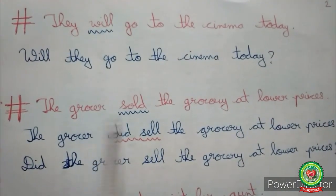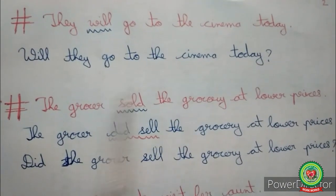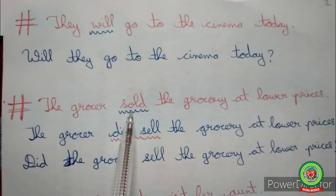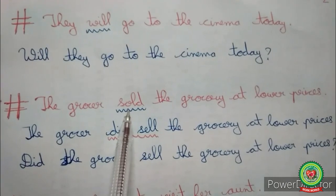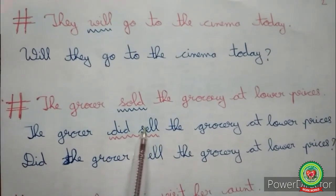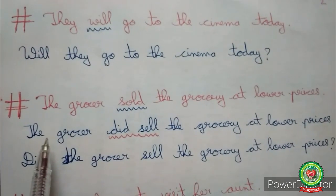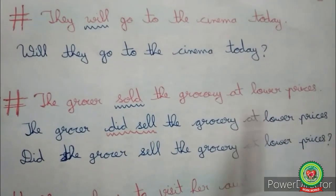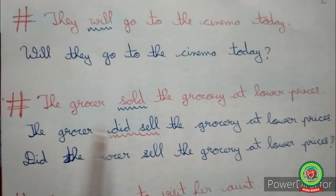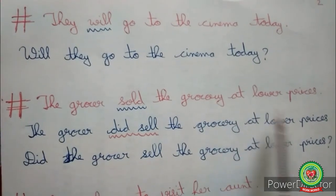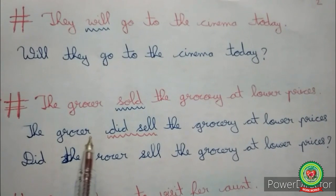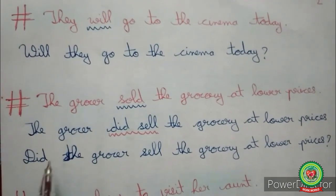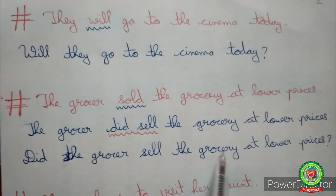See the second sentence: 'The grocer sold the grocery at lower prices.' Now in this sentence a helping verb is not present, so we will see the main verb 'sold,' which is the past form of the verb. We will insert 'did sell,' place 'did' in the beginning, and the interrogative will be: 'Did the grocer sell the grocery at lower prices?'